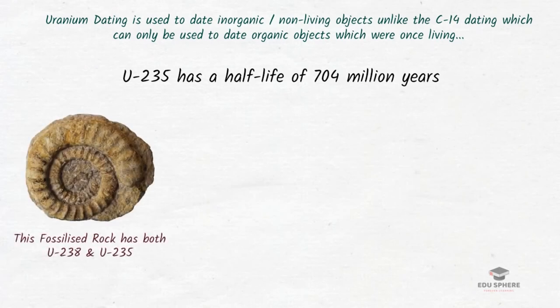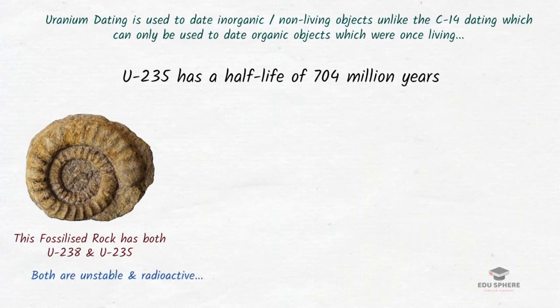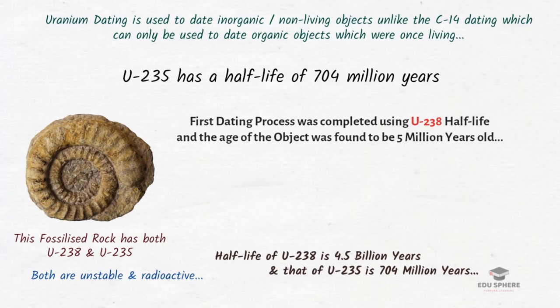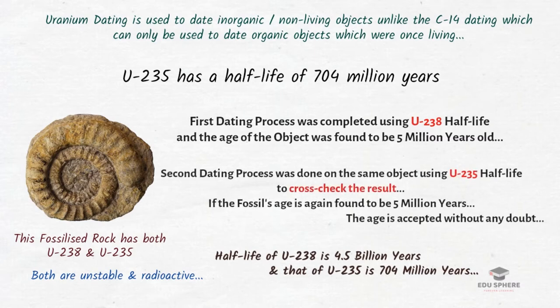Consider an object containing both U238 and U235. During dating, we start with two unstable radioactive isotopes that release radiation until they become stable isotopes of lead. These two uranium isotopes decay at different rates — U238 has a half-life of 4.5 billion years and U235 has a half-life of 704 million years. So if an object is dated at 5 million years using U238, we can cross-check with U235 dating, making uranium-lead dating one of the most reliable radiometric methods.